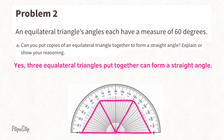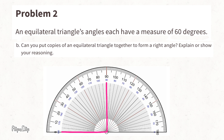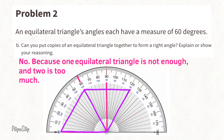Part B: Can you put copies of an equilateral triangle together to form a right angle? A right angle measures 90 degrees and an equilateral triangle measures 60 degrees. One equilateral triangle takes up 60 degrees of the right angle's 90 degrees. Adding another copy brings the total to 120 degrees — too much. The answer is no: one equilateral triangle is not enough and two is too much.